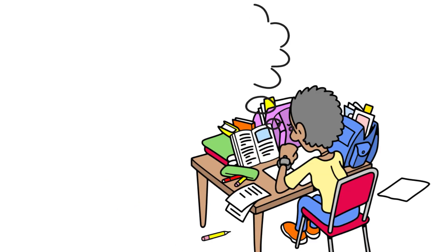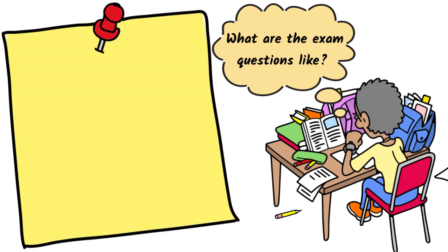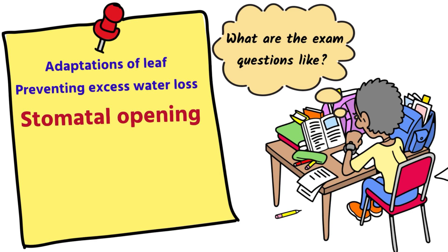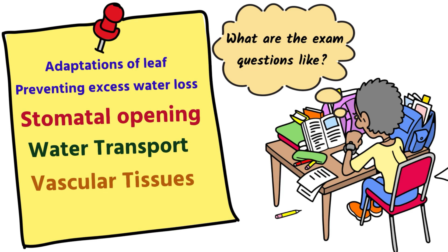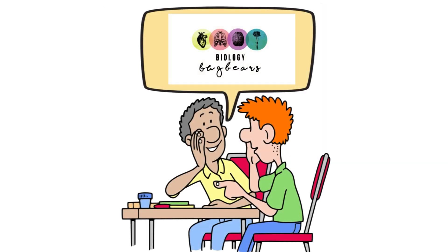What are the exam questions like? At minimum, make sure you know the adaptations of the leaf, a good diagram of the leaf, stomatal opening and closing, water transport, and particularly vascular tissues. Make sure you know about the root — how to draw and label it — the root zones, and the cohesion-tension model. Best of luck with all of that revision. Use the videos, use your textbook, use your notes, and do past papers. Good luck.